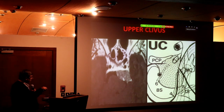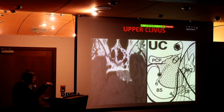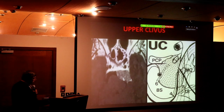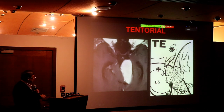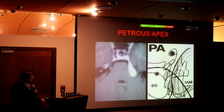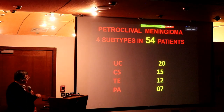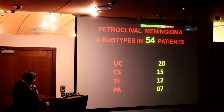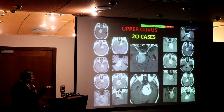Kawase agreed with this classification when I contacted him. Type 1 — apical clival: 20 cases, the attachment is just the clivus. The relationship with the brainstem, posterior clinoid process, trigeminal nerve, and third nerve is different from cavernous sinus tumors. Type 2 — cavernous sinus: 15 cases. Type 3 — tentorial: 12 cases. Type 4 — petrocerebellopontine: 7 cases.